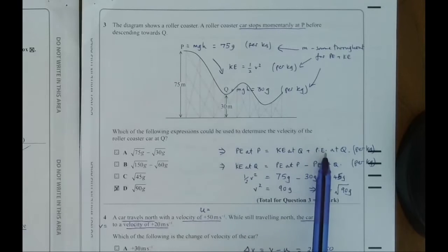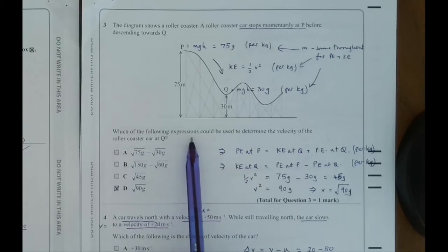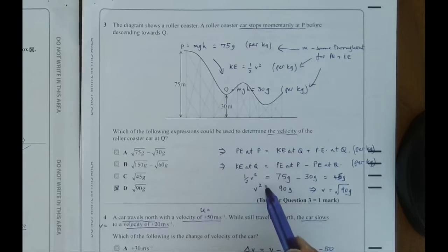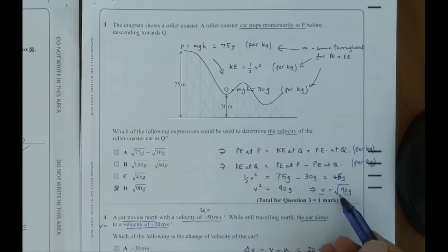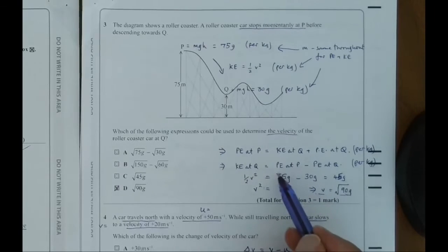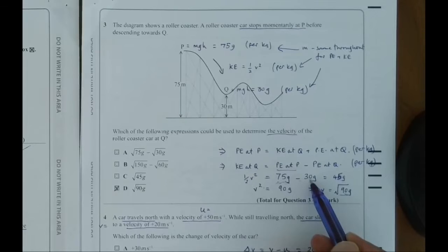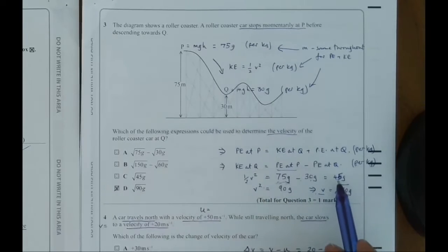The potential energy at P is equal to kinetic energy at Q. Some of it has gone to kinetic, so speed it up, plus the potential energy at Q. Remember we're doing per kilogram. So we know the potential energy at P is 75 metres times the gravity, and mass is just one, so it doesn't really need to be included in the equation. Minus 30G is the potential energy per kilogram here. It will be equal to 45G. So half V squared will be 45G, so V squared will be 90G, and V will be the square root of 90G, which means the answer must be D.